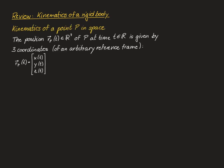Let's begin with the kinematics of a point p in space. The position of p, denoted by a vector r with index p at time t, is given by three coordinates from an arbitrary reference frame, called x(t), y(t), and z(t). We assume the position depends on t, meaning point p moves through space following a trajectory.